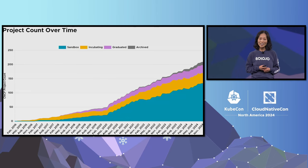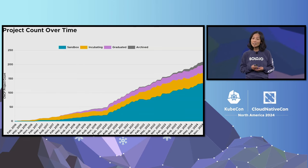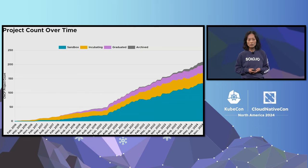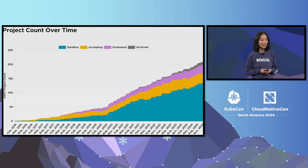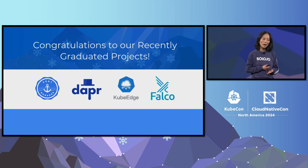One thing really interesting is you can see moving trends. We added more graduated projects each year. We added more incubation and Sandbox projects each year. And this year we also archived nine projects in total. This is because the CNCF TOC community is very actively looking at project health in the CNCF ecosystem — if projects are not active, we put them into archive. Please join me and give a big round of applause to all the graduated projects this year. We're so proud of them.